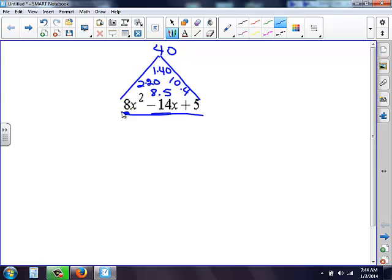Now I look at this middle term. I need a negative 14 out of my four options I have here. And I look at 10 and 4. It's the only way for me to make a negative 14 is to have a negative 10 and a negative 4. So that's what I'm going to split this up into.